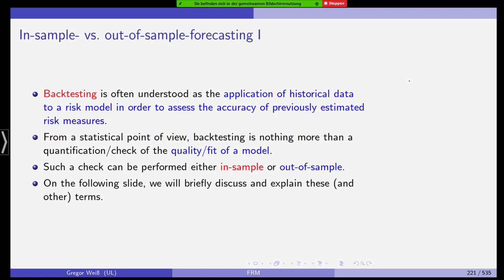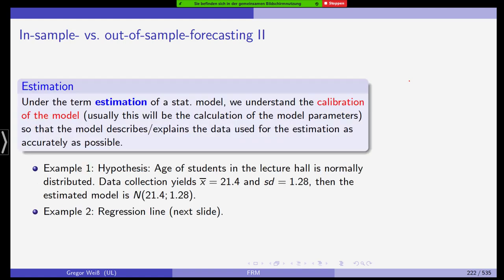In-sample versus out-of-sample forecasting. Backtesting is often understood as the application of historical data to a risk model in order to assess the accuracy of previously estimated risk measures. From a statistical point of view, backtesting is nothing more than simply quantifying or checking the quality or the fit of a model. This check can be done in-sample or out-of-sample. First of all, we have to be careful about the words estimation, forecasting, modeling.